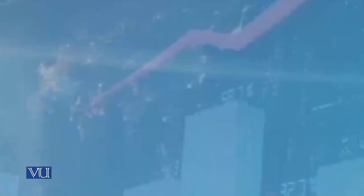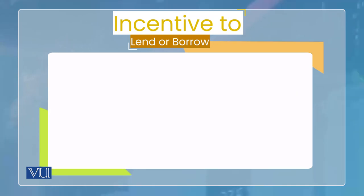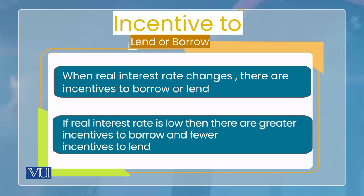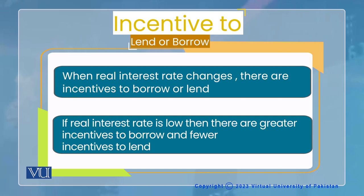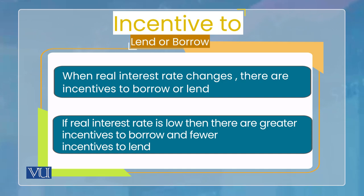Now when interest rate changes, it creates incentives. For example, when real interest rate is low, it is an incentive for borrowers to borrow more. And if real interest rate goes high, it is an incentive for lenders to lend more. So whether real interest rate is low or high, it keeps changing the incentives for borrowing and lending.